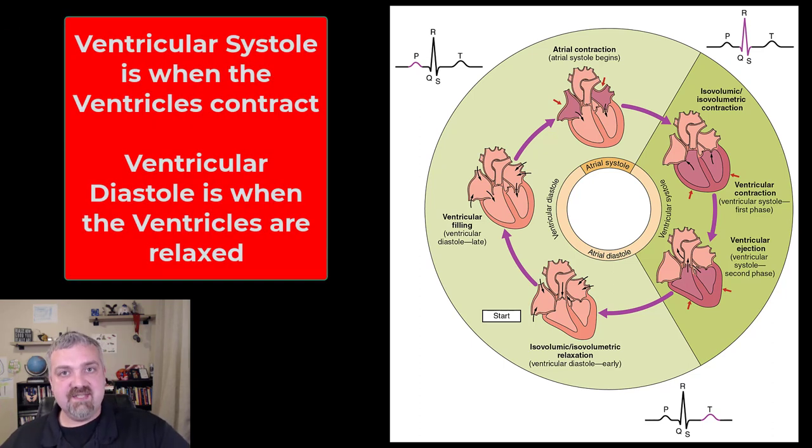Then we have ventricular systole, when your two ventricles are contracting. The right ventricle is going to send blood through the pulmonary circuit to your lungs and back. The left ventricle is going to send blood through your systemic circuit everywhere else. That's what happens during systole.